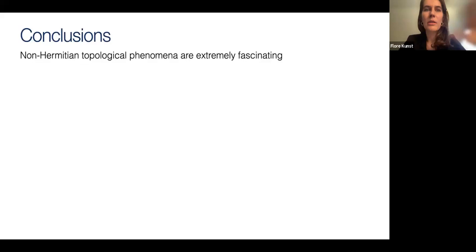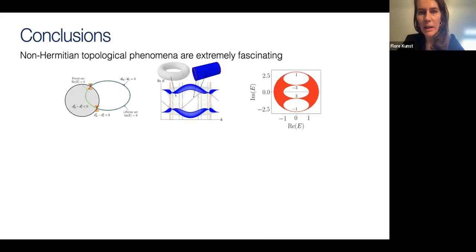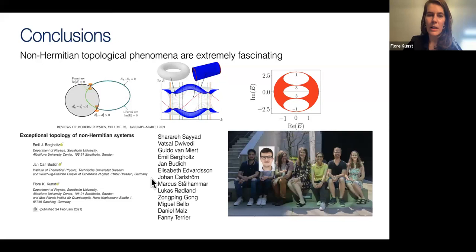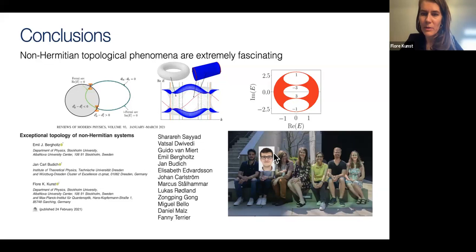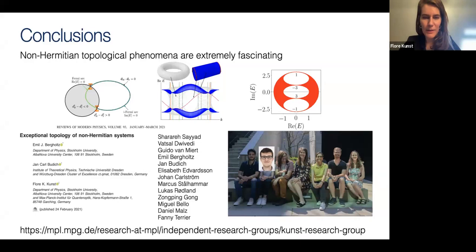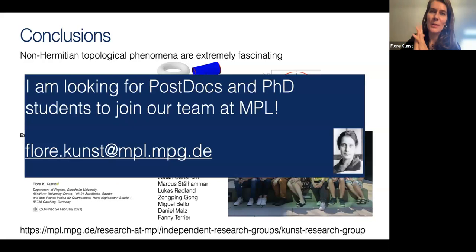In conclusion, I hope I've convinced you that non-Hermitian topology is extremely fascinating. I showed you several examples: Fermi arcs, exceptional points, broken bulk-boundary correspondence, and dissipative analogues of Hermitian boundary physics. Here's the review paper I mentioned in the beginning. I'd like to thank all my collaborators on these projects. I'm looking for postdocs and PhD students, so please send candidates my way.